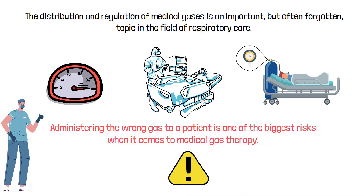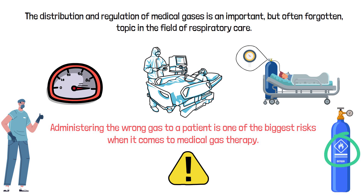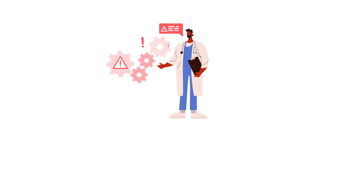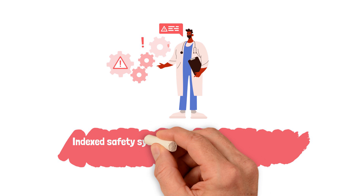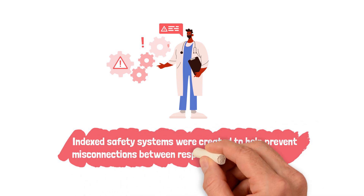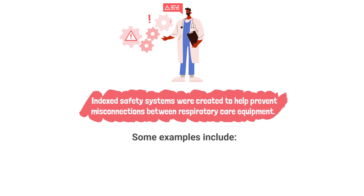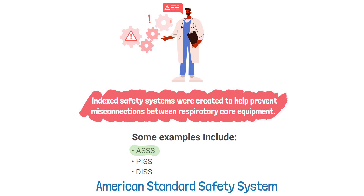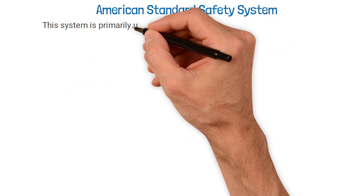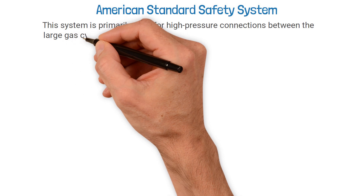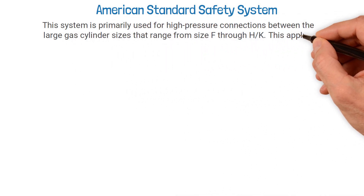This is why as a respiratory therapist you are required to read the cylinder or outlet label first before administering. Human error does occur, which is why indexed safety systems were created to help prevent misconnections between respiratory care equipment. Some examples include ASSS, PISS, and DISS. For this video we're focusing on ASSS, which stands for the American Standard Safety System. This system is primarily used for high-pressure connections between large gas cylinder sizes that range from size F through H and K.